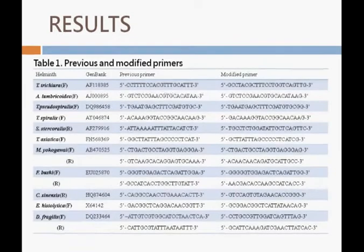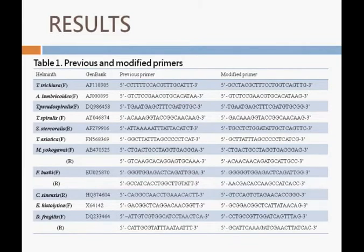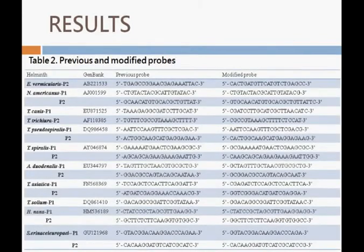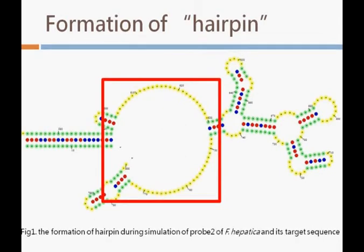Primers or probes that did not fulfill the criteria have been modified. Table 1 shows the primers that were modified. 27% of the primers which showed cross-interactions or monomer formation were modified to increase specificity. 80% of the probes obtained from journal articles were also modified due to their low percentage of binding. The monomer or hairpin formation during simulation gives rise to a high chance of self-binding and reduces correct binding between the probe and amplicons or primer and target sequences. The problem was solved by replacing or extending the primers or probes to avoid corresponding bases from pairing with each other, forming a hairpin.